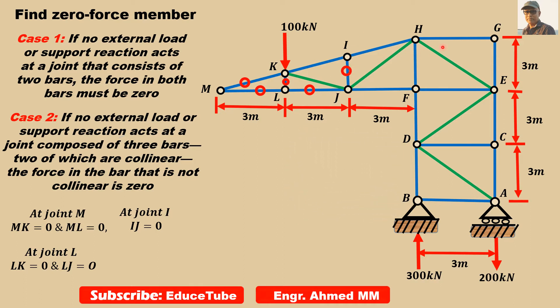Now let's move to G. It looks like it will follow Case 1 because no external load, no support reaction, and it consists of two bars. So these two will be zero: GH and GE.